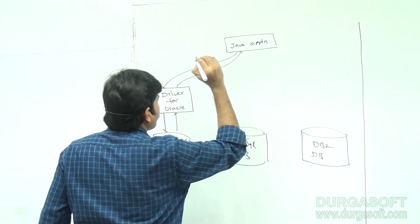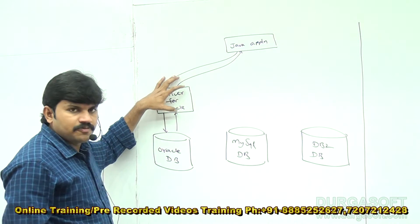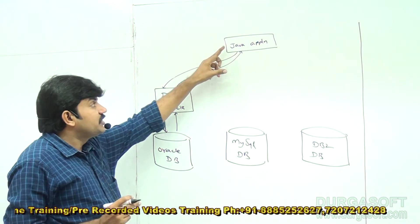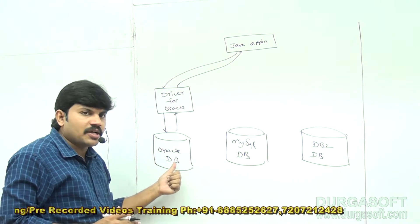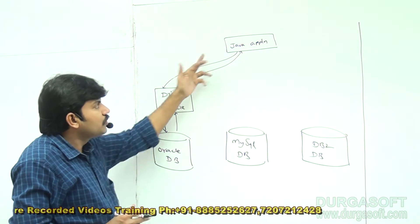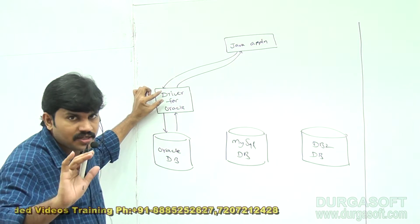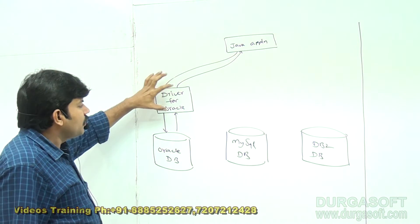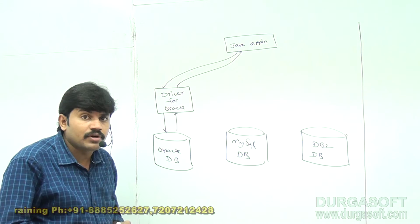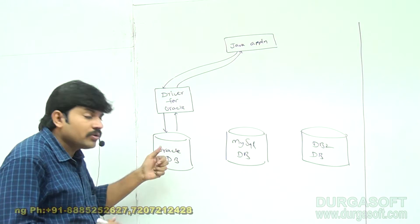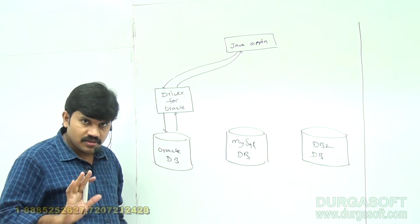If a Java application wants to communicate with Oracle database, we require a driver for Oracle. The Java application communicates with this driver, and this driver communicates with the database. The driver is responsible for converting Java terminology — Java calls into database-specific calls, and database-specific calls back into Java calls. If I use a driver for Oracle, this driver converts Java calls into Oracle-specific calls and Oracle-specific calls back into Java calls.